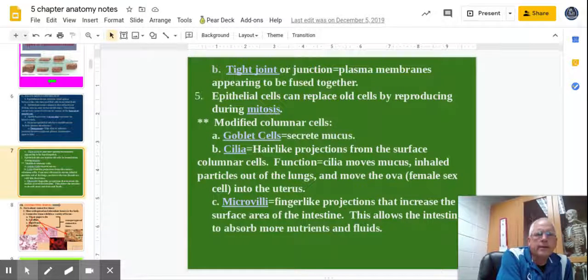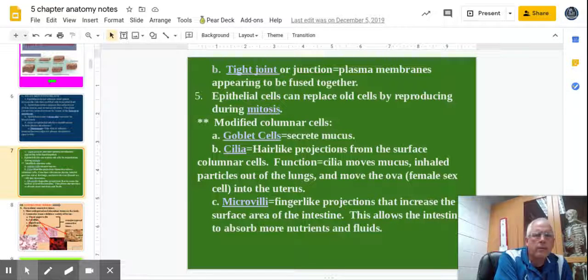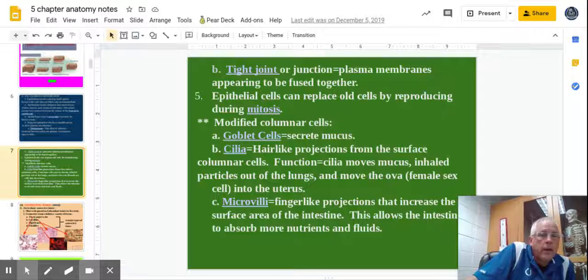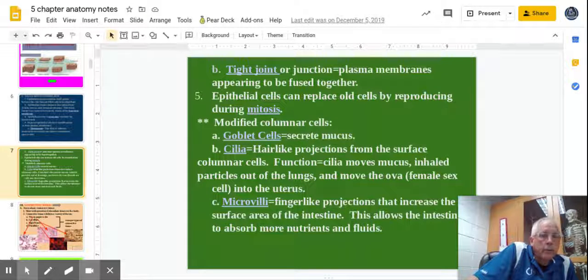Last thing with epithelial, we got mitosis. That's where cells, we know that from bio one where they rapidly reproduce and produce more. That's what we worry about with burn victims. Do we burn past that layer where mitosis is going on? Epithelial dies and we replace. So mitosis is a critical part to that.